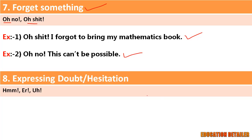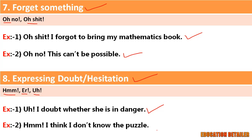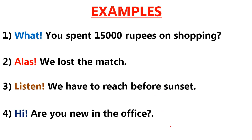Eighth and last, when we doubt or hesitate about something, we use interjections like hm, er, or ooh. For example: 'Ooh, I doubt whether she is in danger.' and 'Hm, I think I don't know the answer to this puzzle.' At the end, I have given some examples for you to identify the feeling or emotion that the interjection is expressing.